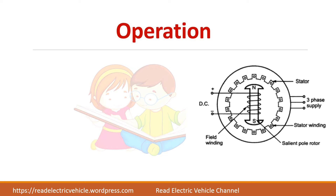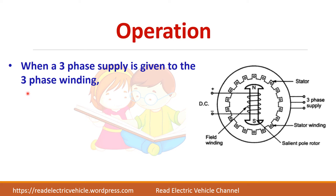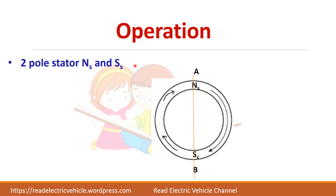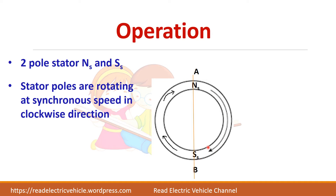When a three-phase supply is given to the three-phase winding of the stator, a rotating magnetic field of constant magnitude rotating at synchronous speed is produced. Let us take a two-pole stator. You have a north pole here and south pole here. When you give the AC supply, these poles will be rotating at synchronous speed in the clockwise direction.